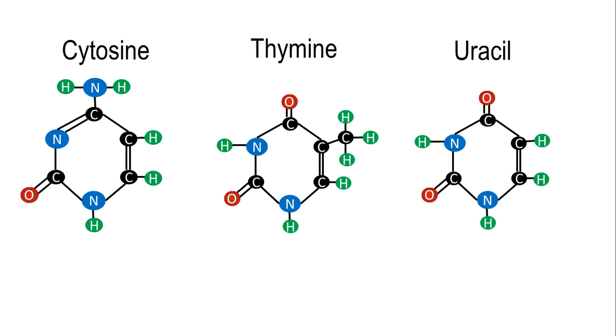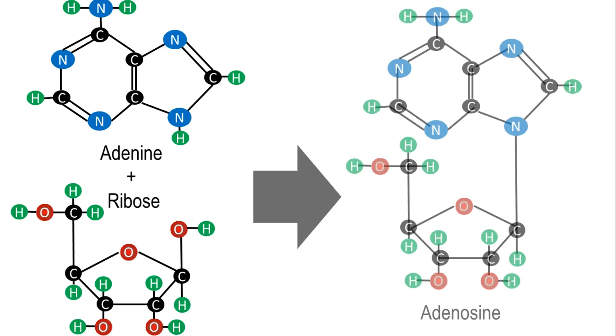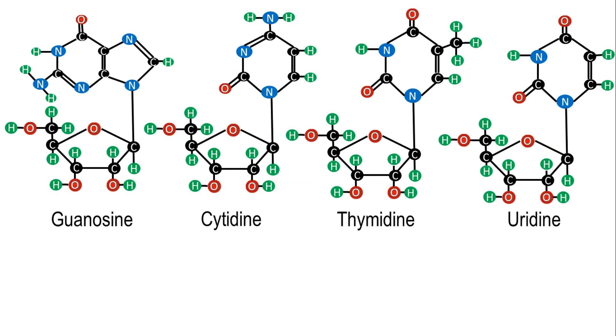A nucleoside formed by the union of ribose and adenine is called adenosine. The other ribonucleosides are called guanosine, cytidine, thymidine and uridine.